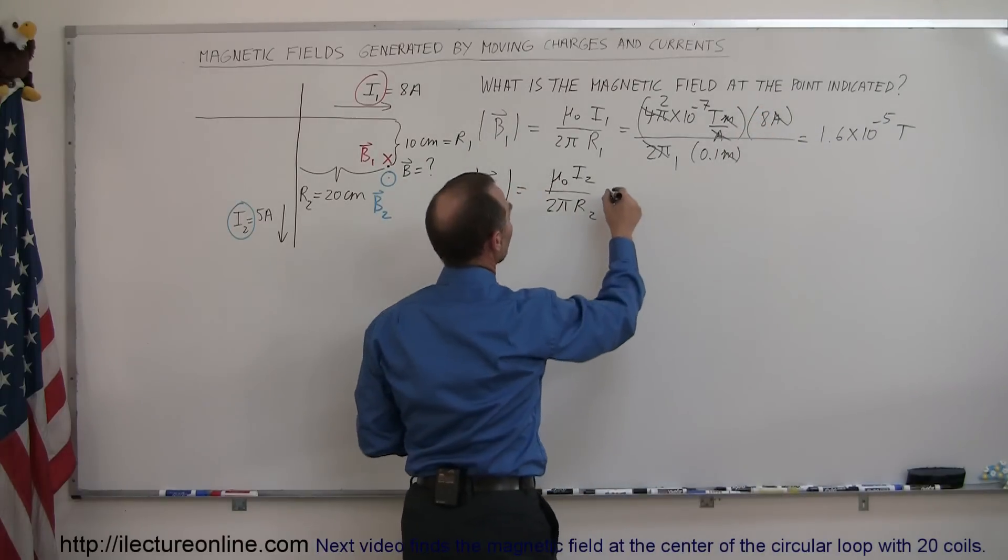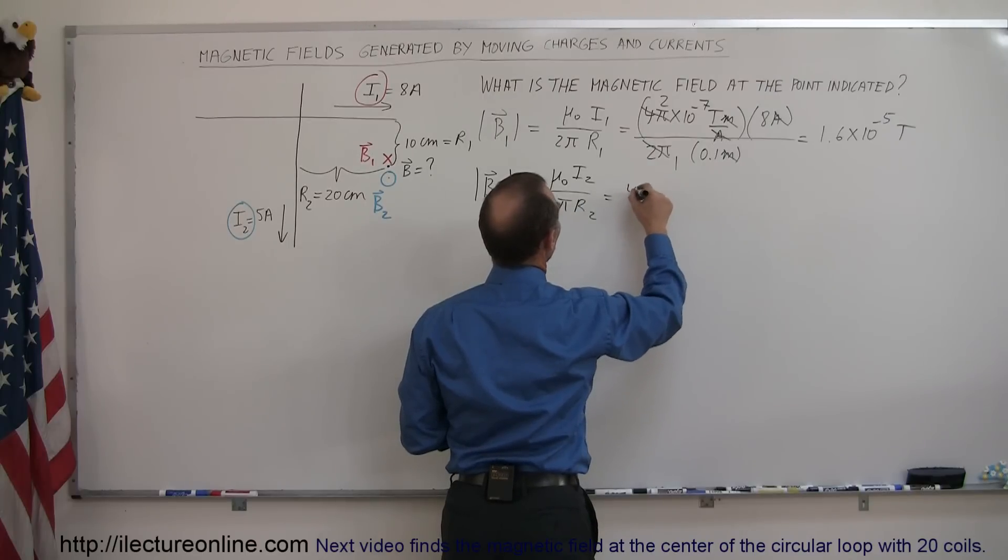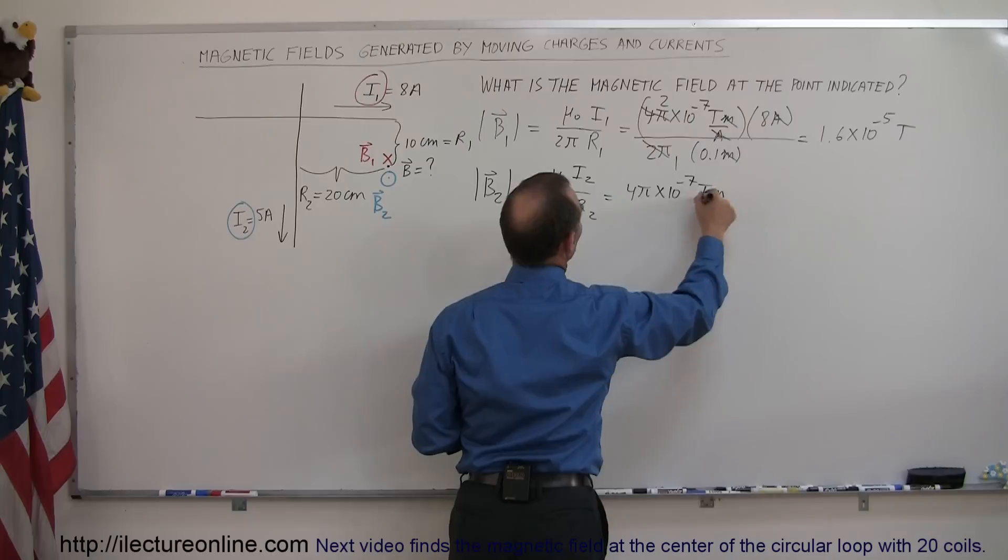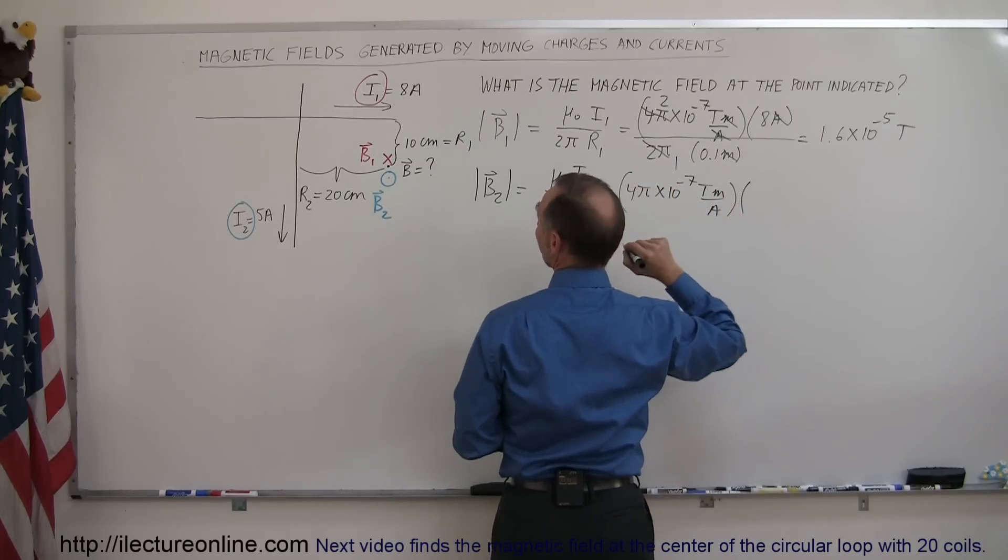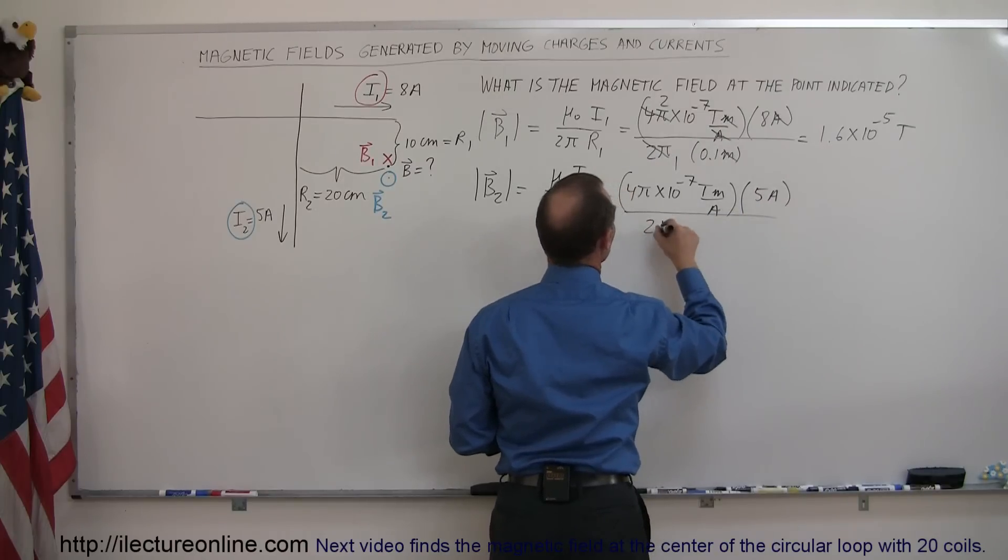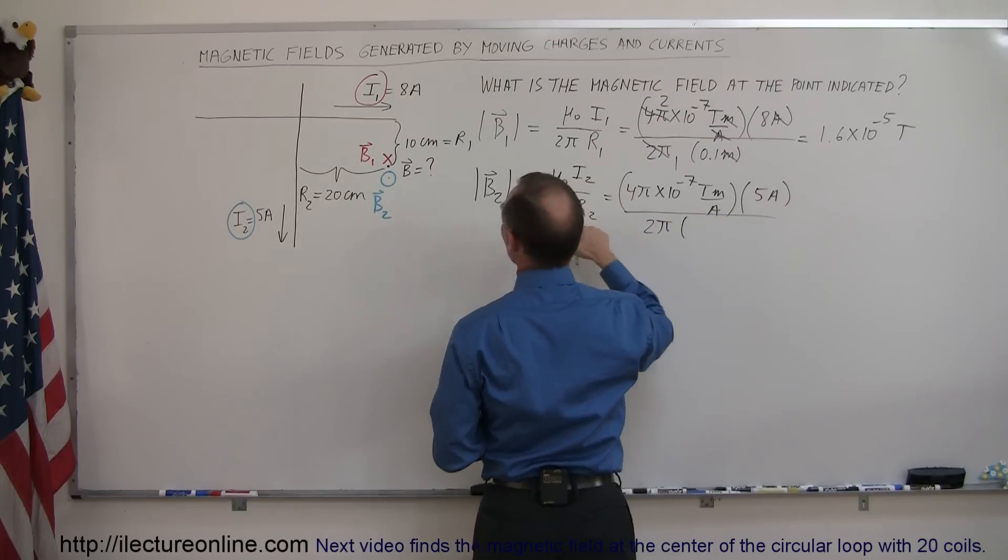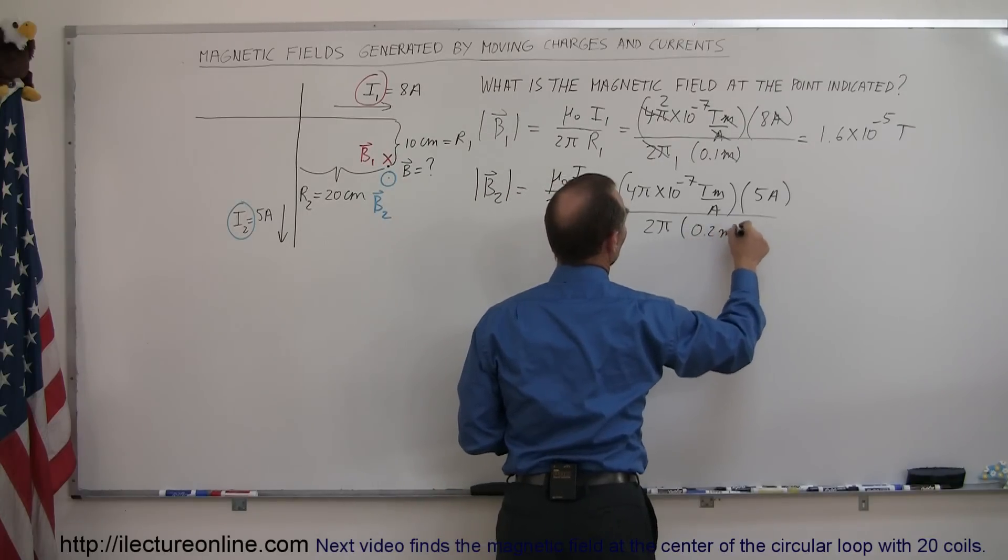The second magnetic field value here would be 4 pi times 10 to the minus 7 teslas meters per amps, multiply this times the current I2, which is 5 amps, divided by 2 pi, and multiply times the distance, and R2 would be 20 centimeters or 0.2 meters. Again, amps cancel amps, meters cancel meters, you end up with teslas.